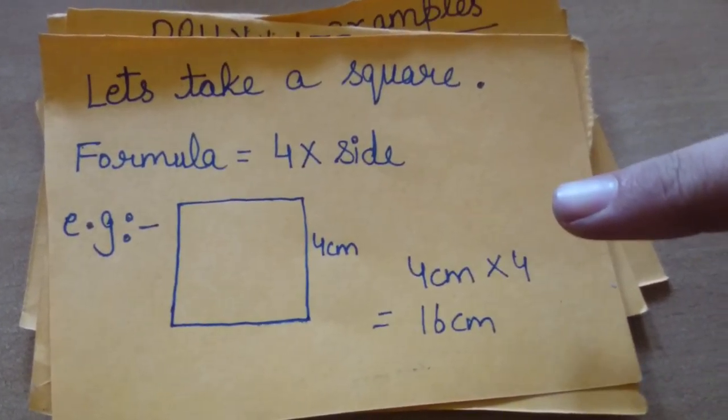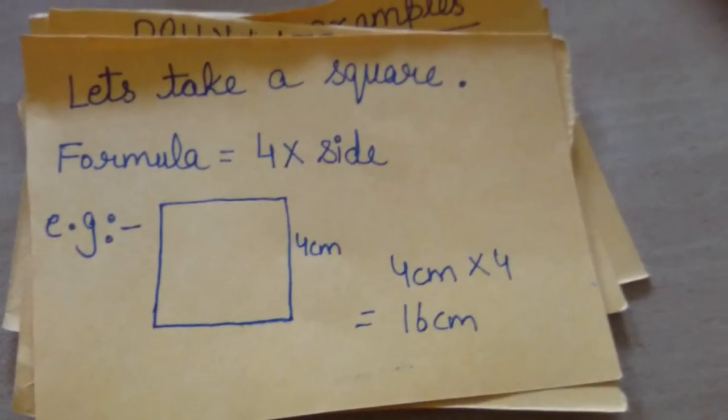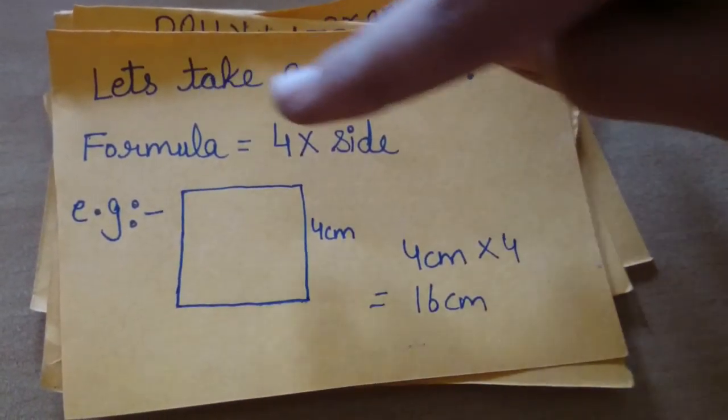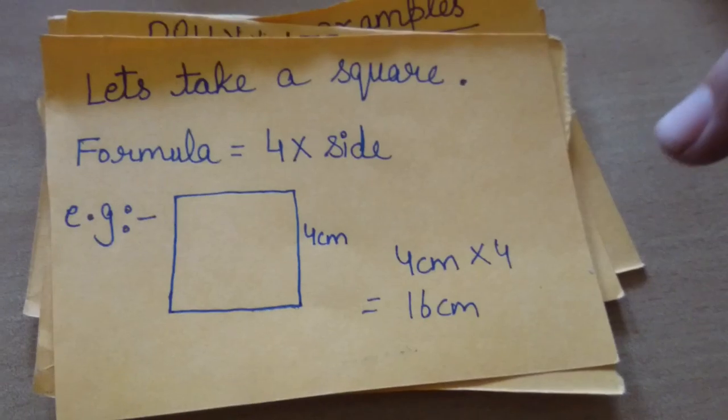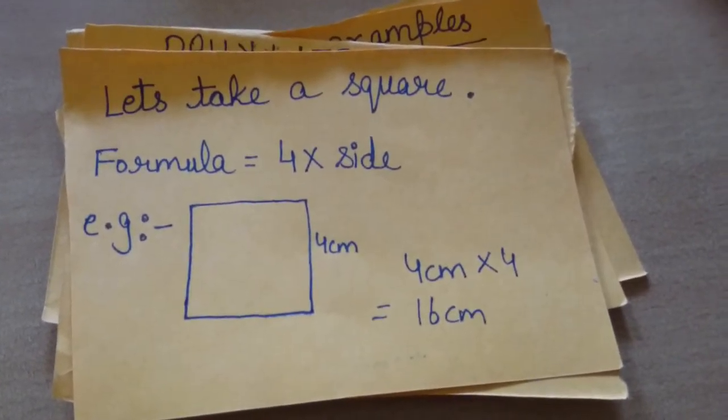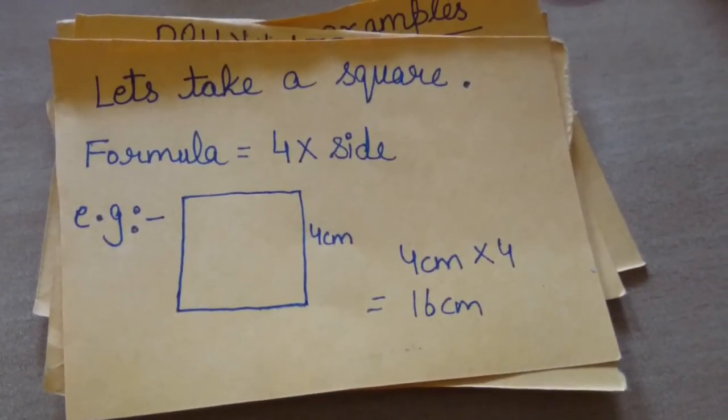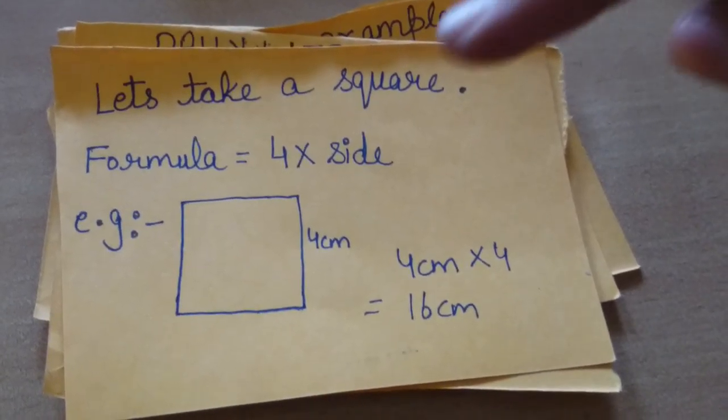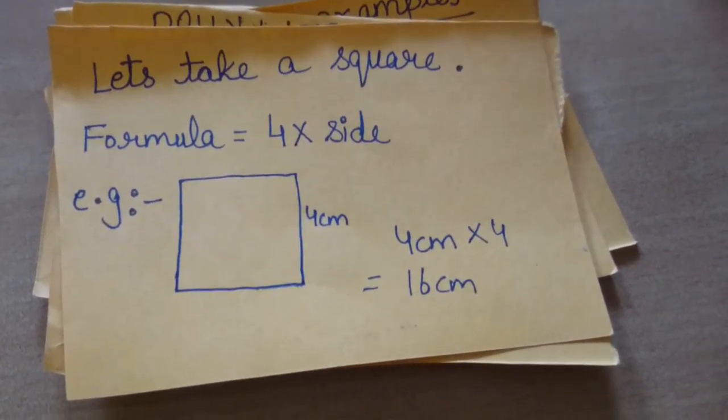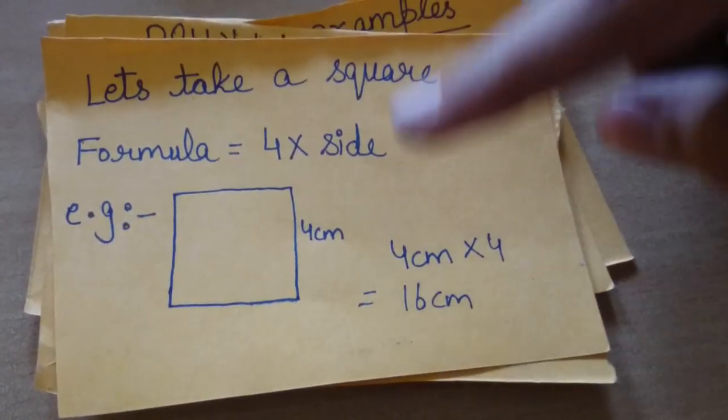We multiply it by 4 because all the sides of a square are equal in length. Then, adding 4 again and again is a complicated method, so we will multiply 4 by the length.